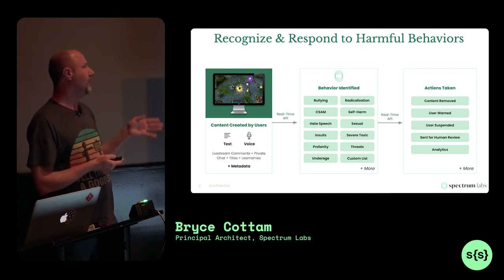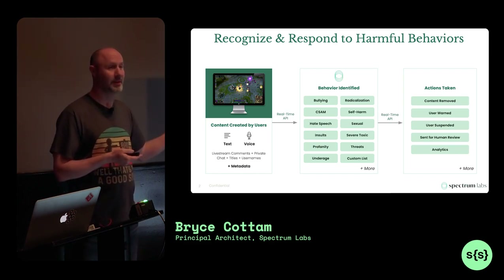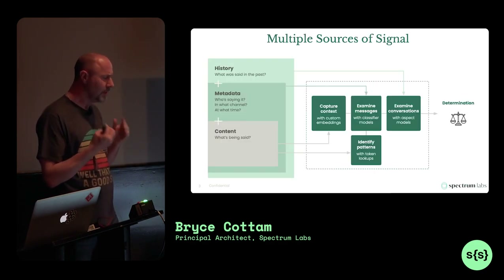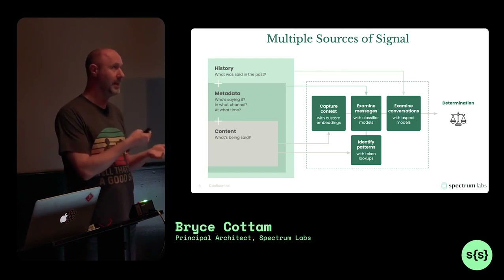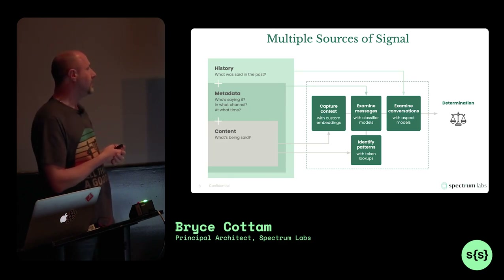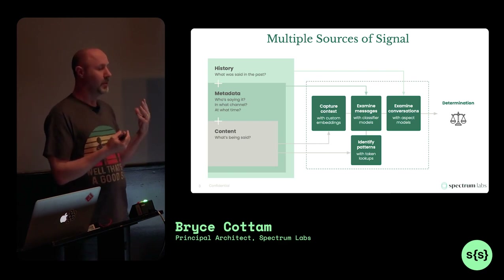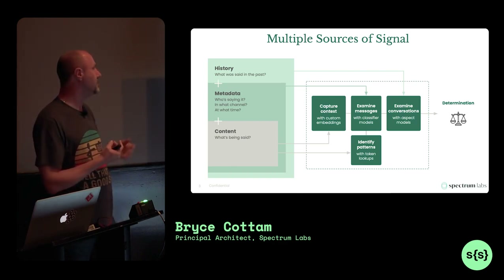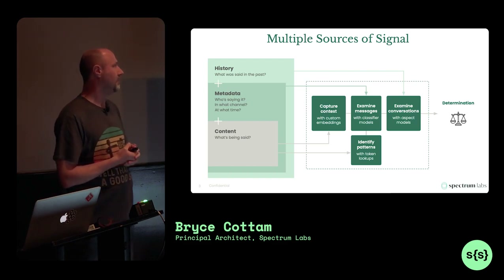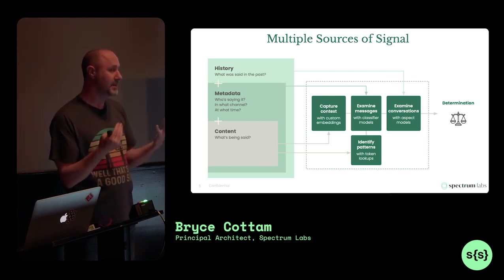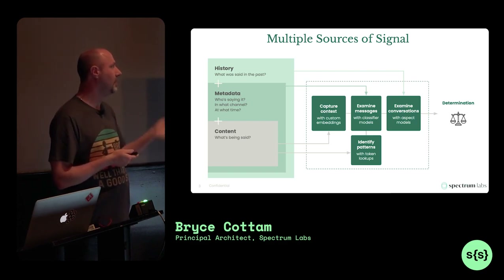When there's disruptive behavior, they generally want to take action like taking down content if it's illegal, warning a user, or calling the authorities if something is illegal. To make these determinations of whether a behavior is present in a conversation, we take signal from a few places: history — what we've seen before; metadata about the current message, like context and how many people are involved; and the content itself. We pull signal from those three primary areas, put it through classifiers and business logic, and come up with a determination.